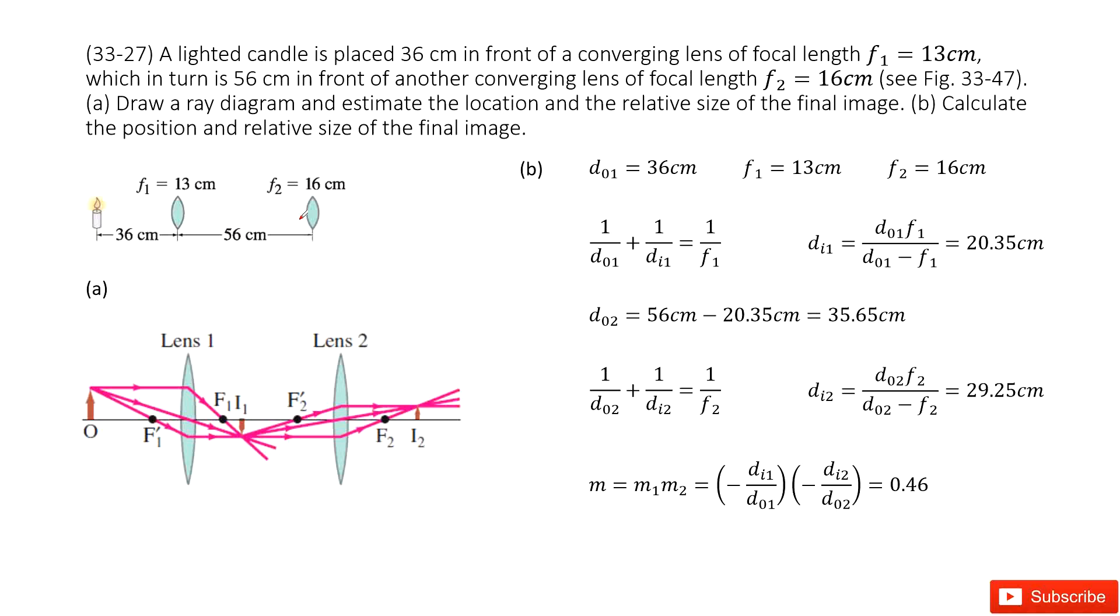First of all, we need to draw a picture to show the location and relative size for the final image. You can see this object is there. First, it goes through lens one.